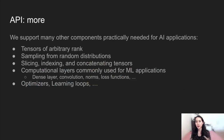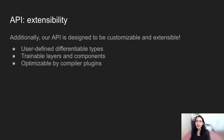We also support many other components practically needed for AI applications. Notably, our API provides the necessary tools to tackle traditional ML problems, such as layers and optimizers. In addition, the API is designed to be customizable and extensible. For example, you can differentiate with inputs or outputs being user-defined types, and you can also add user-defined trainable layers and components. Finally, our API is designed to be optimizable by a compiler plugin.